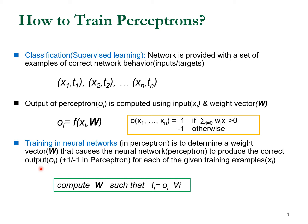Perceptron is used for classification learning. In classification learning, for every input data it comes with a target value T. For input data X1, it comes with target value T1, and X2 has T2, etc. In the perceptron network, the output depends on the value of X input and the weight value of the network W.